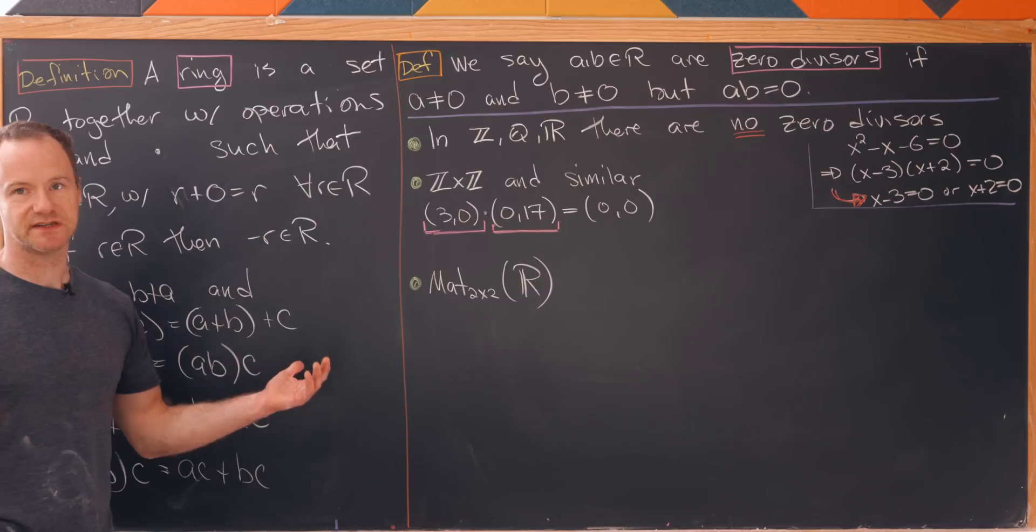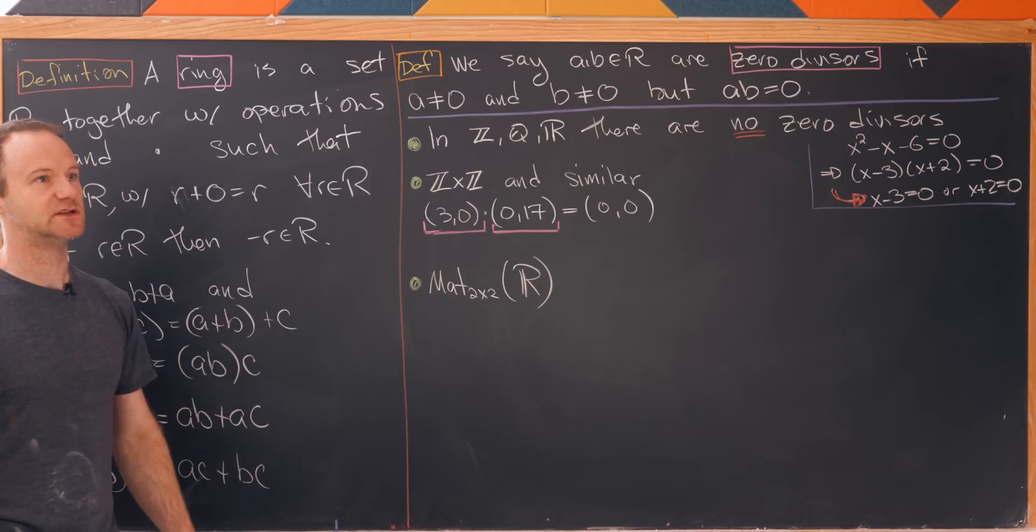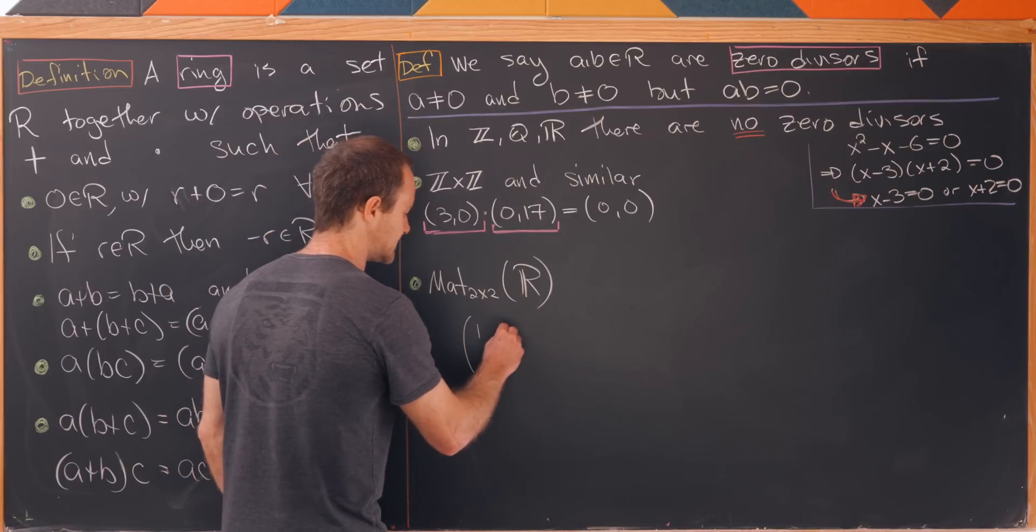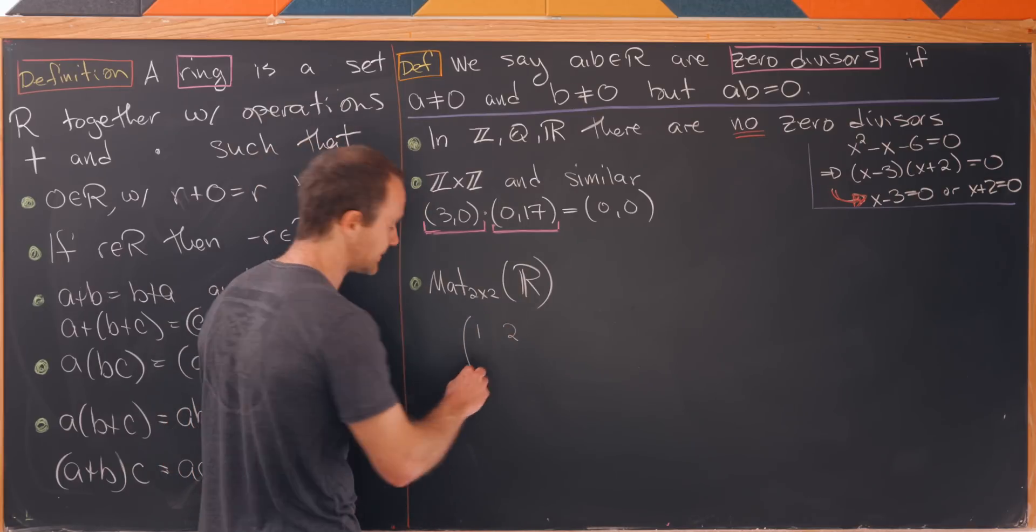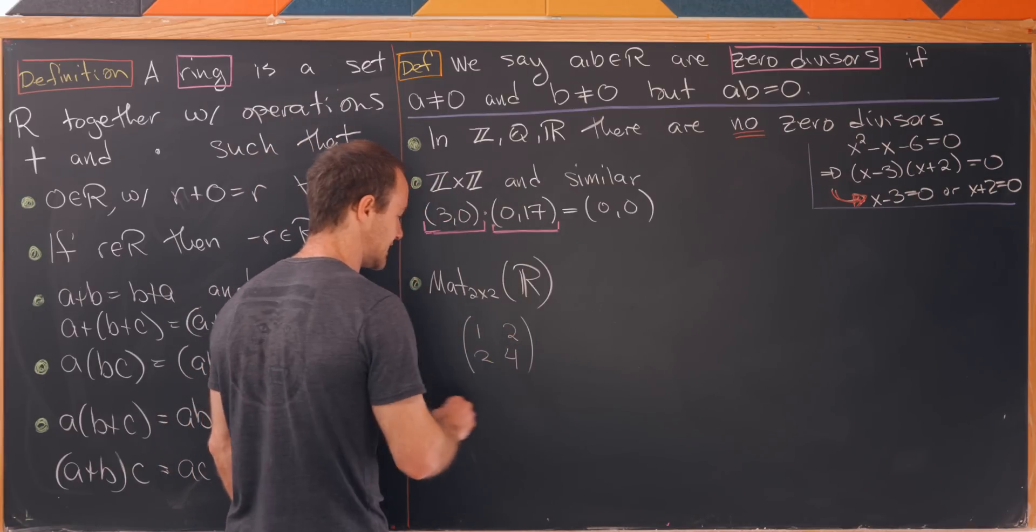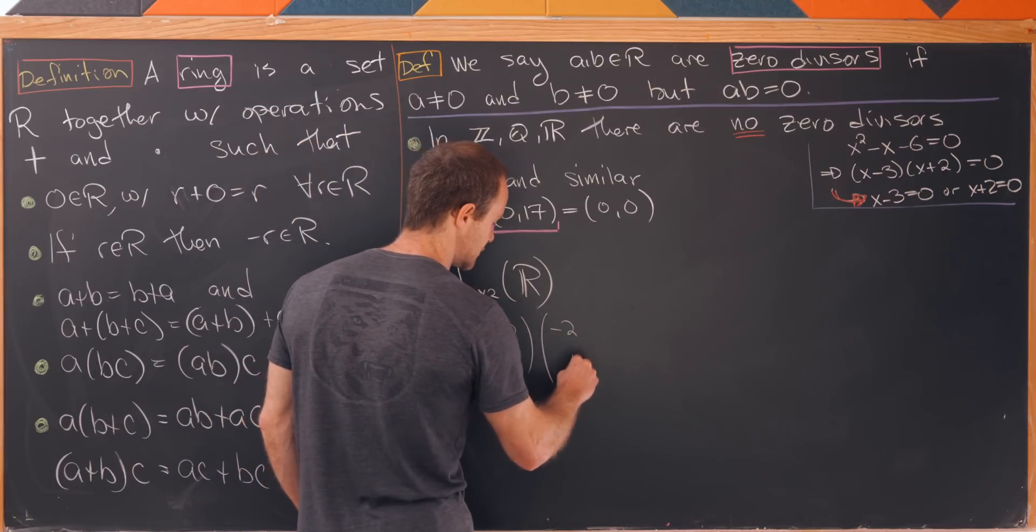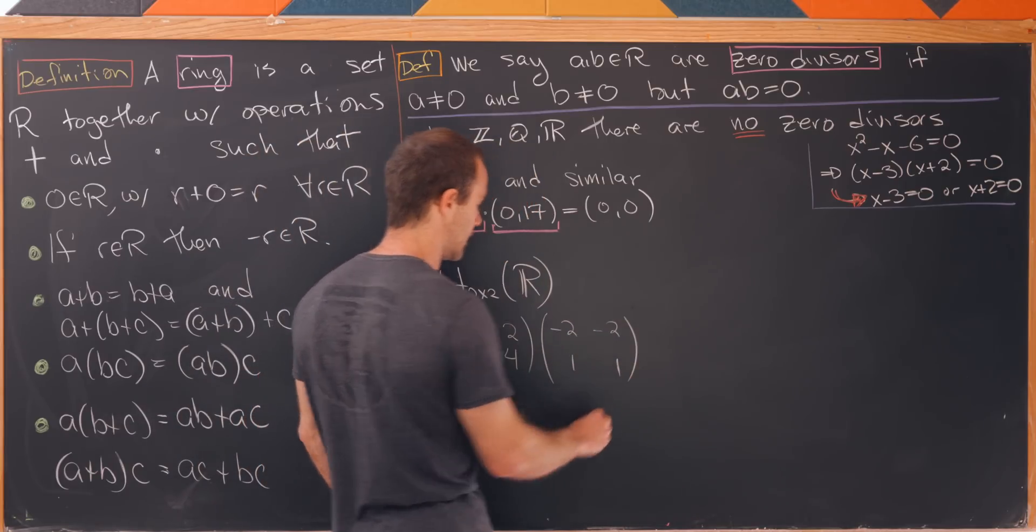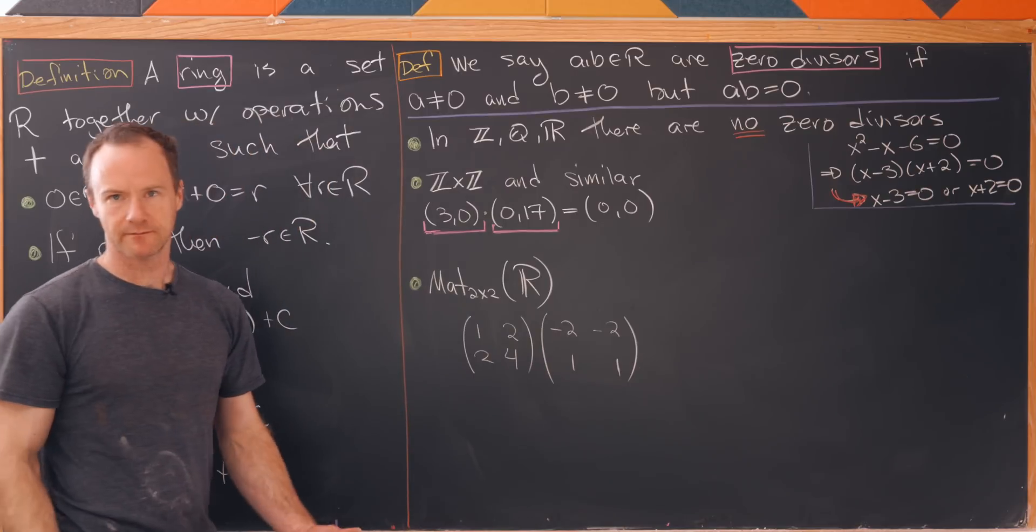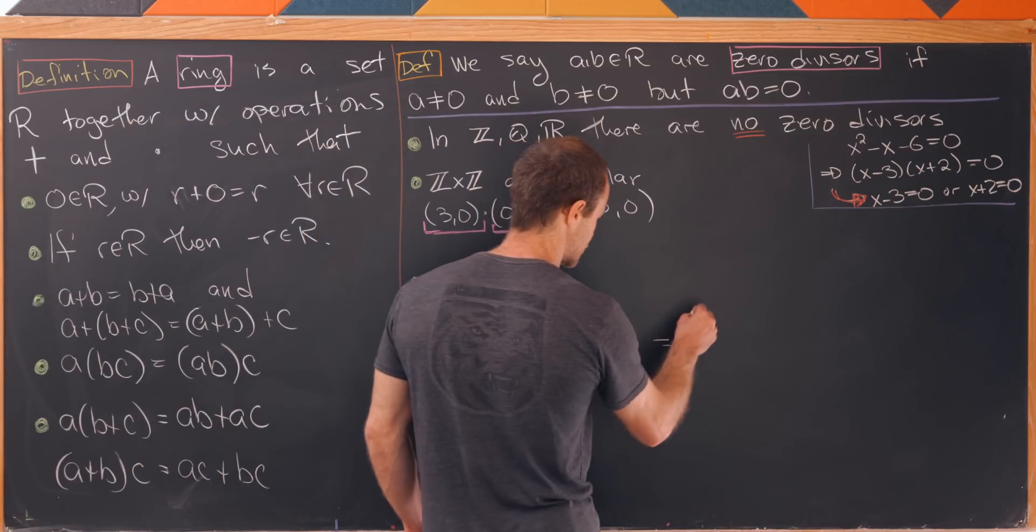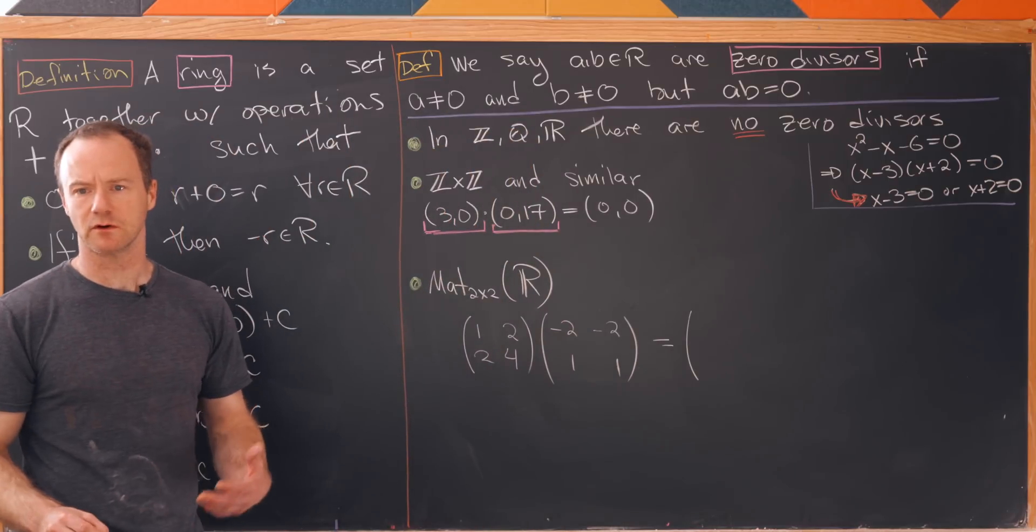Now let's move on to matrices and likely you've seen examples of matrices that do this in a linear algebra class if you've taken one but maybe you didn't use the word zero divisor. So let's look at an example. So let's take [[1,2],[2,4]] so that matrix right there and let's multiply it into the matrix [[-2,1],[-2,1]].